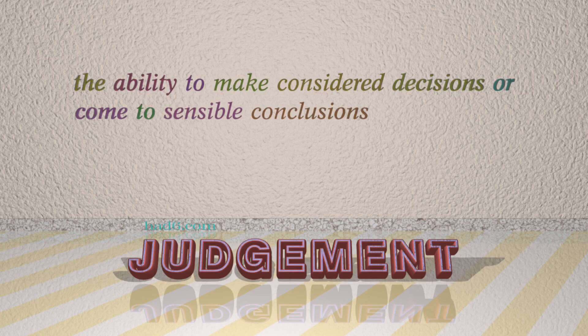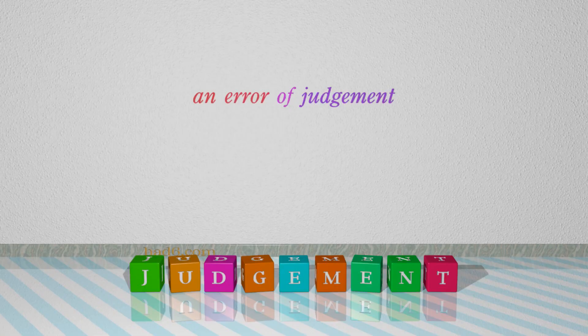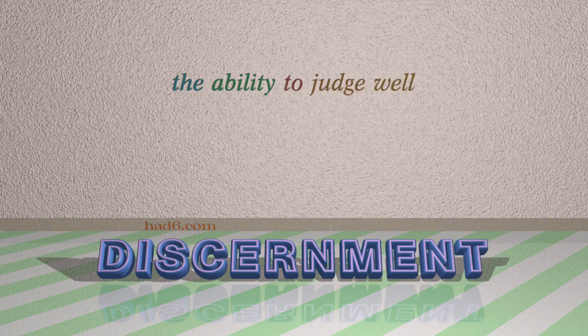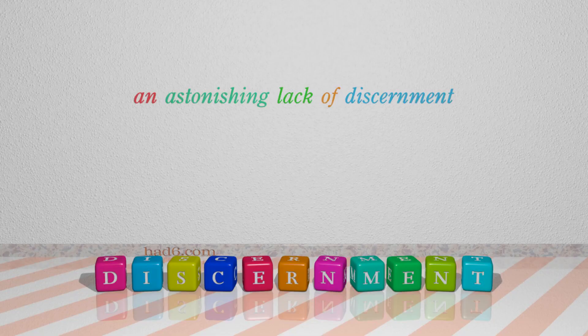Number 13: The ability to make considered decisions or come to sensible conclusions. Number 14: Discernment. Which means the ability to judge well. For example: An astonishing lack of discernment.